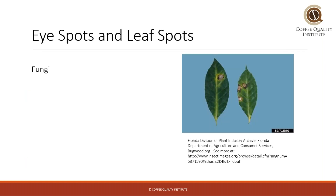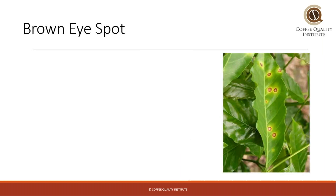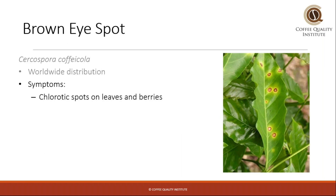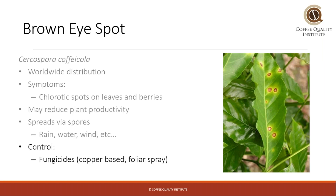Next, we have coffee eye spots and leaf spots — a large group of fungi that generally don't cause major issues like plant death, but are very prevalent worldwide. One specifically is the brown eye spot, distributed worldwide, presenting with brown spots on leaves or berries. This can reduce plant productivity because affected leaves won't photosynthesize effectively. These fungi spread via spores transported by rain, water, or wind, and are generally controlled with fungicides — though in many cases, since it's not a huge problem, it's left untreated.